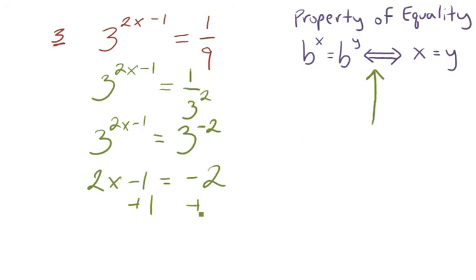Solving for x, we add 1 to both sides. 2x equals negative 1, and dividing by 2 on both sides gives us an answer of x equal to negative 1.5.